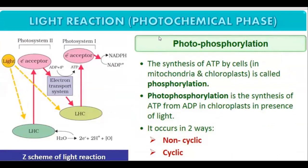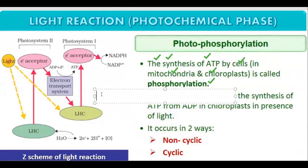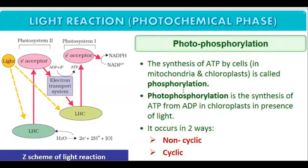The next part of the photochemical phase is photophosphorylation. The synthesis of ATP by cells in the mitochondria and chloroplast is called phosphorylation. Phosphorylation means addition of phosphate — ADP plus phosphate becomes ATP. Phosphorylation occurs in mitochondria, chloroplast, and peroxisomes. Photophosphorylation is the phosphorylation that takes place in the presence of light — it is the synthesis of ATP from ADP in the chloroplast in the presence of light. Photophosphorylation is of two types: cyclic and non-cyclic.